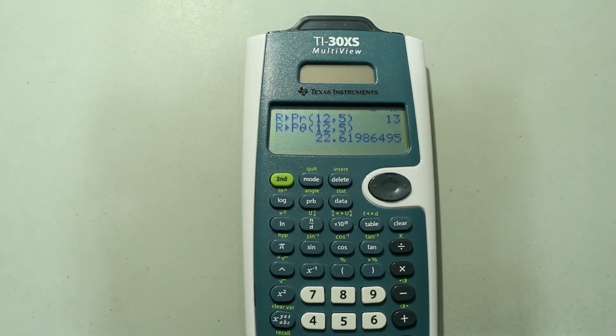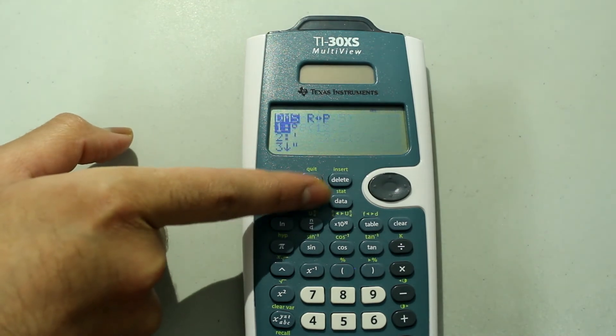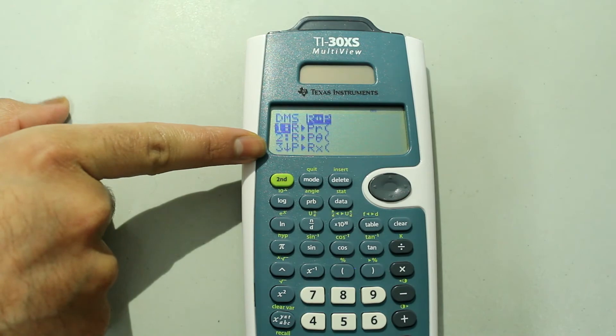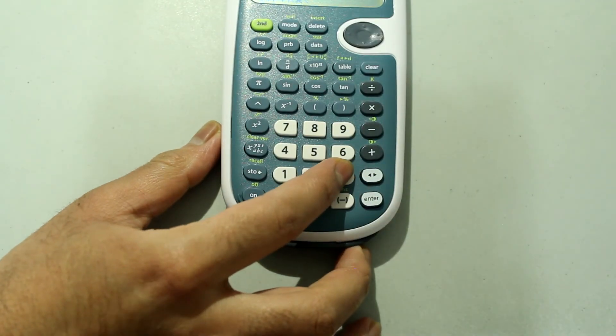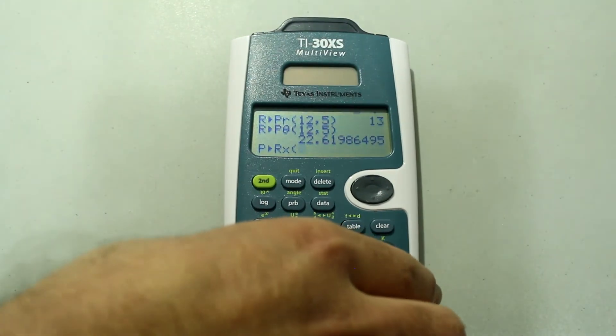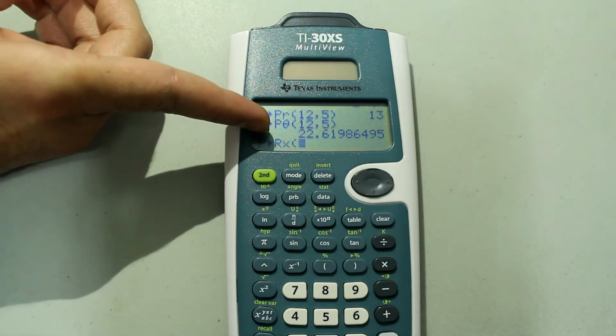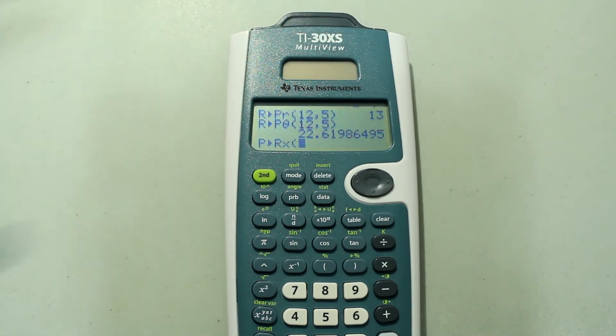Now let's say you wanted to go from the polar form to the rectangular form. We're going to go back to the same menu, so second and the probability button, and then arrow right. But this time we're going to choose the third option. So just press 3 on the number pad, and that selects the third option for you. And this time notice what this is saying. This is going from polar to rectangular, and it's going to give you the x value.